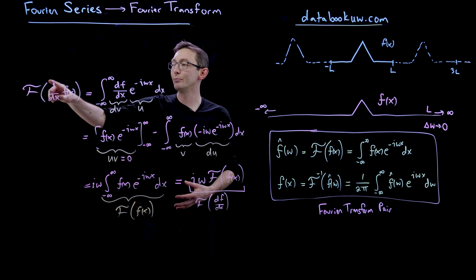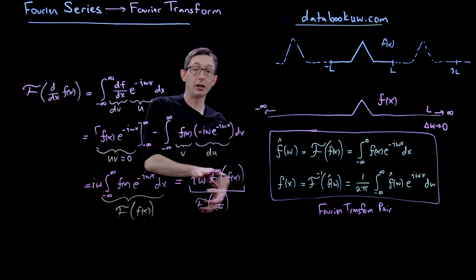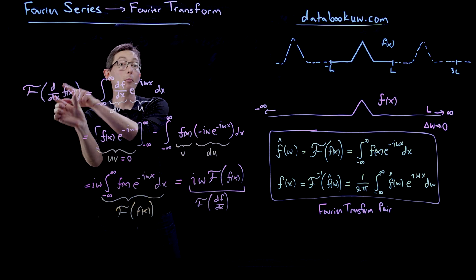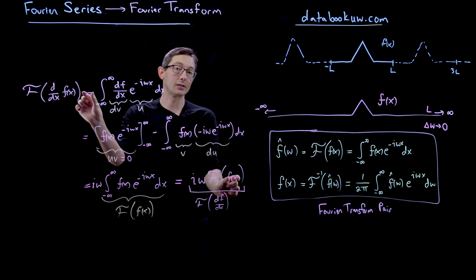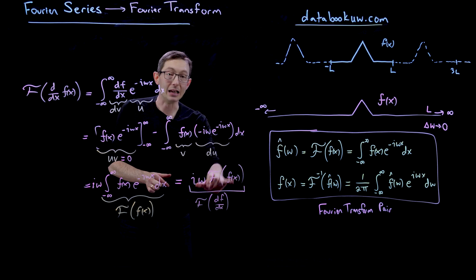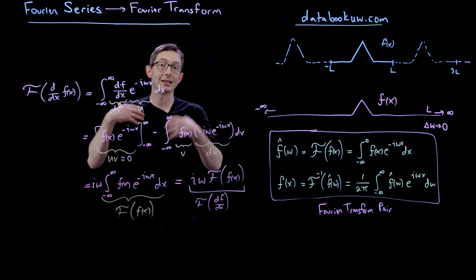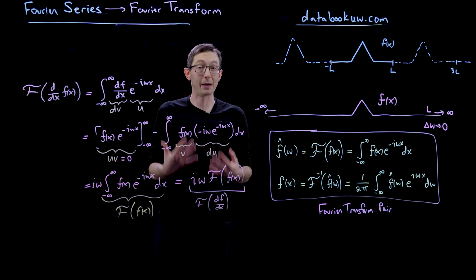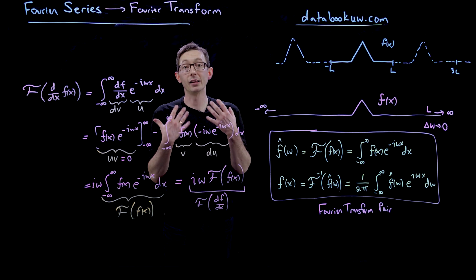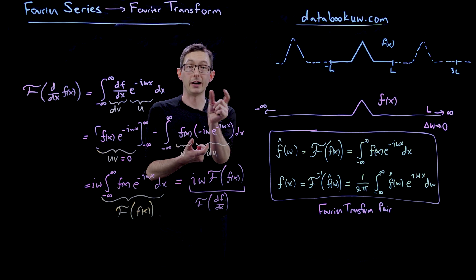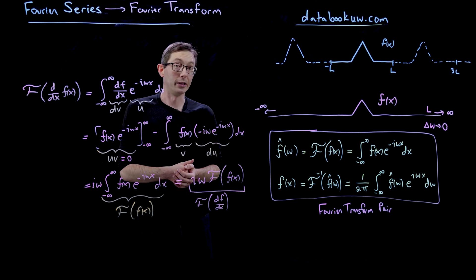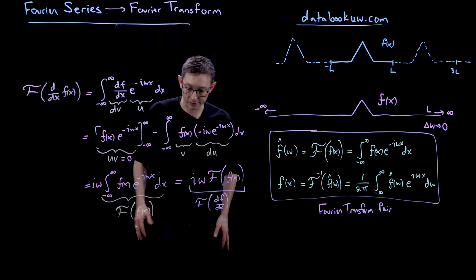This is an extremely useful property. I can compute derivatives more accurately in the Fourier domain in some cases — I Fourier transform my function, multiply by i omega, and inverse Fourier transform. This is called the spectral derivative, and we're going to code that up in MATLAB and Python. We'll see that it's more accurate than doing a finite difference — central difference, forward difference, or backward difference — like you would normally do.